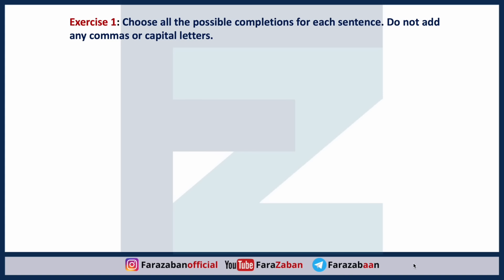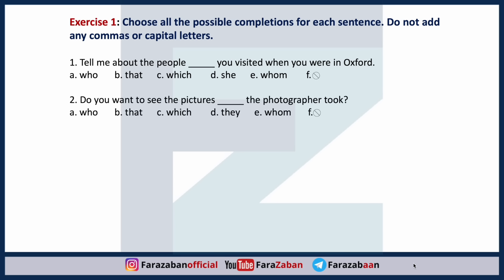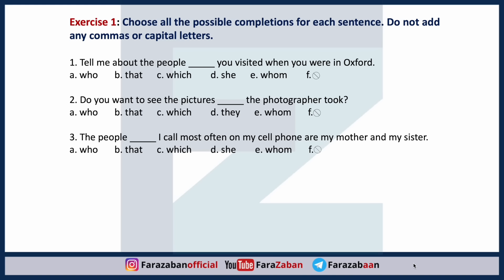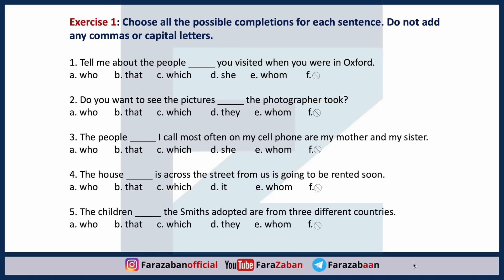Exercise one — circle all possible answers for each sentence. Do not add any commas or capital letters. Number one: tell me about the people you visited when you were in Oxford. Number two: do you want to see the pictures the photographer took? Number three: the people I call most often on my cell phone are my mother and my sister. Number four: the house across the street from us is going to be rented soon. Number five: the children the Smiths adopted are from three different countries.